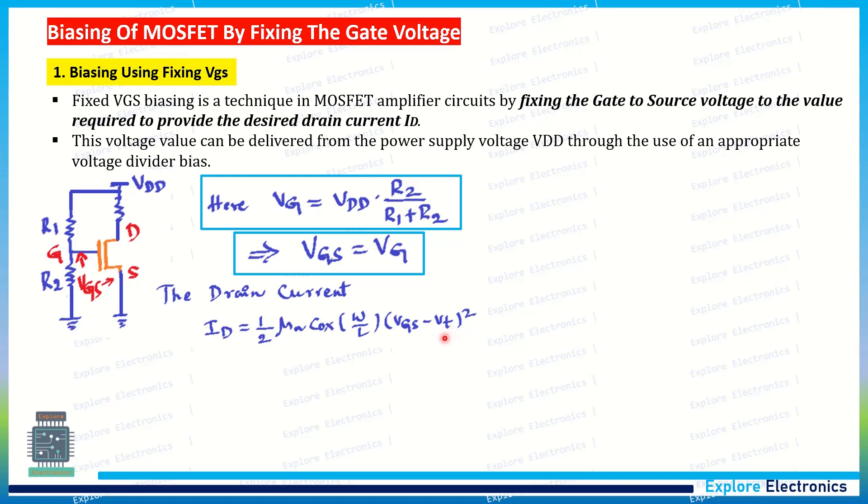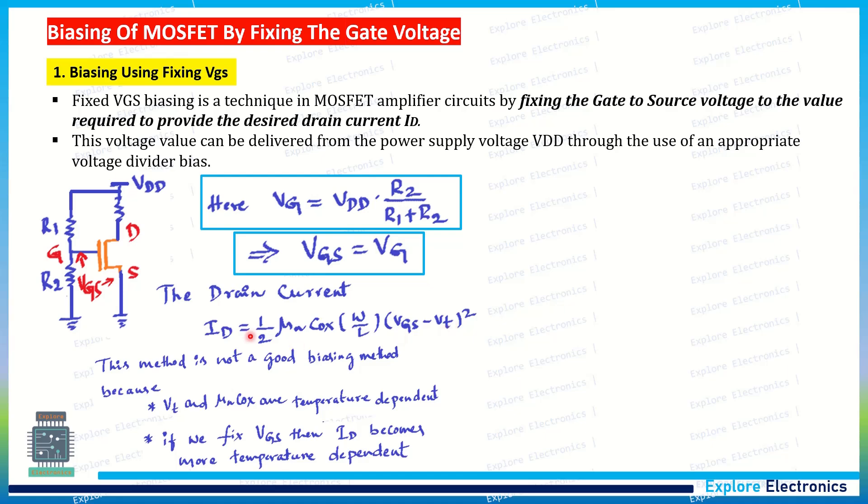In this method, what happens? The dependence of ID on VGS in saturation region: if we need to keep VGS constant, ID is constant. But because of the temperature variation, this mu_N and VT may vary. That leads to a large variation in ID. But since VGS is constant, still ID is varying. That is the problem with respect to this method.